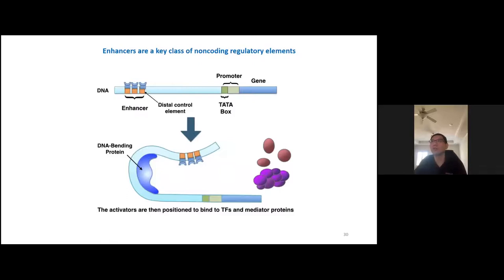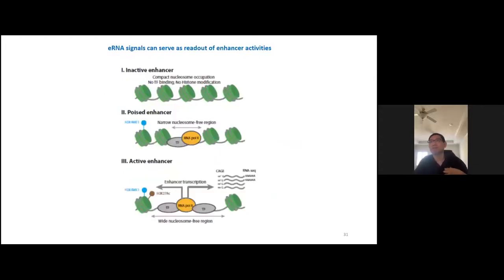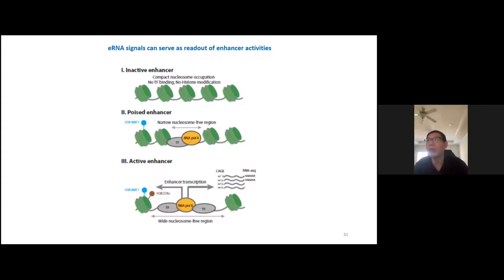Enhancers are a very important regulatory element — a key class of non-coding regulatory elements. In linear space, an enhancer may be far away from its target gene, but in 3D structure, the enhancer is usually close to the target gene promoter and helps recruit transcription factors, thereby increasing target gene expression. Importantly, in the enhancer activation state, the nucleosome falls out, the region becomes accessible, and short RNA transcripts are generated — called enhancer RNA or eRNA. Studies showed that eRNA signal can be used as a readout for enhancer activity.